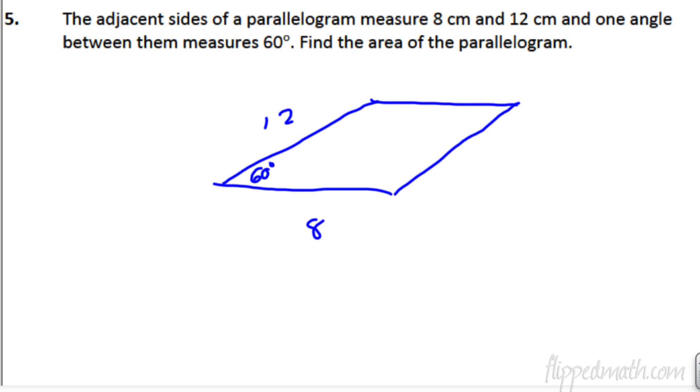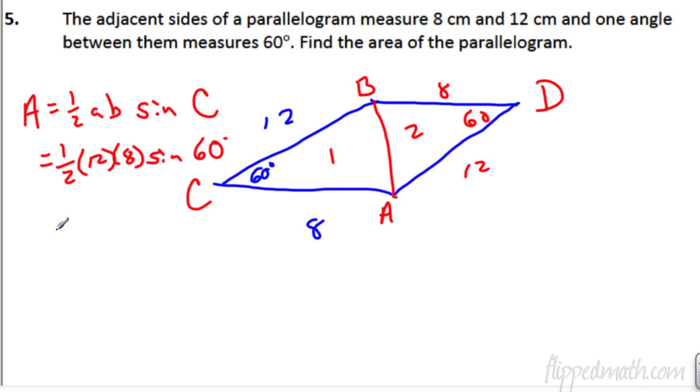This is so simple because what we can do is we can create two congruent triangles. And if I do that, what do we have? Well, this would be 8. This would be 12. This would also be 60. So, I can find the area of triangle 1 and triangle 2. But they're going to be the same. So, just find that area of triangle 1 and then you can multiply by 2. The area is going to equal one half AB times the sine of C. What do we get? One half. A would be 12. One half times 12 times 8 times the sine of 60.